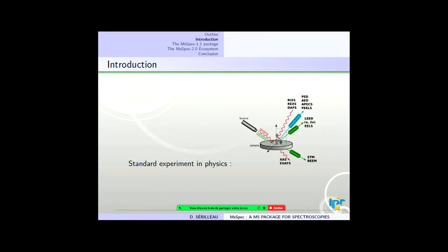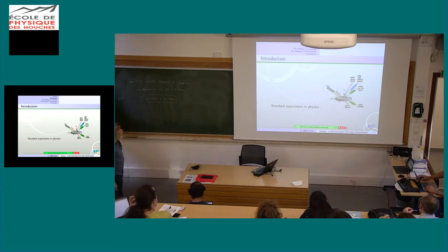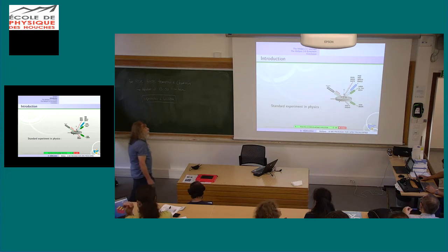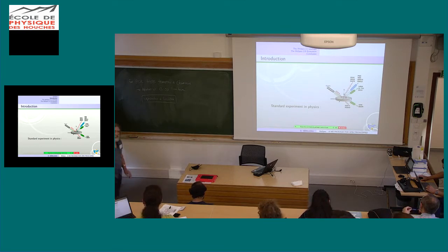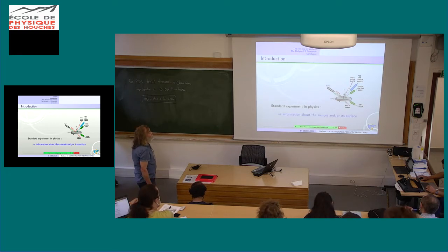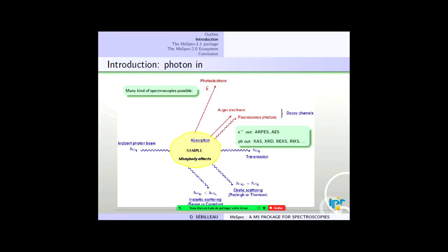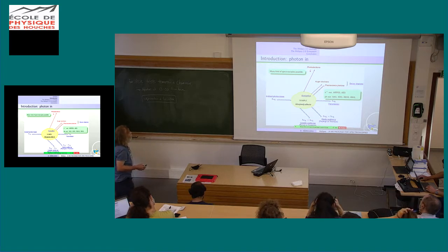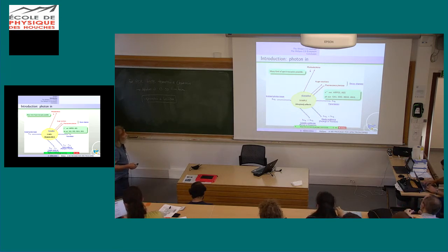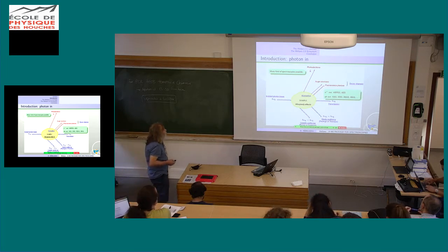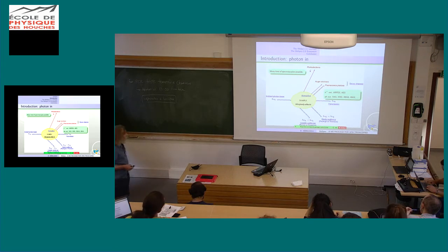A standard experiment — this is a cartoon you already saw in Jan's talk. A standard experiment in physics is to shine something onto a sample and then measure the same something or something else. Basically, this is a way to gain information about the sample or its surface. This is an example from either one photon in, one electron out, or one photon in, one photon out spectroscopy. With just one incoming photon beam, you can already have a lot of spectroscopies, and with these spectroscopies you can probe the matter and extract very useful information.